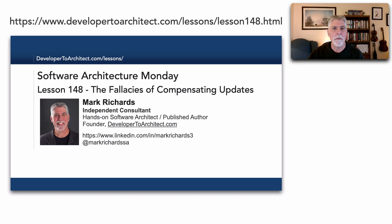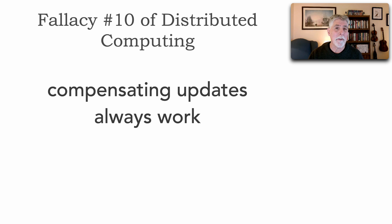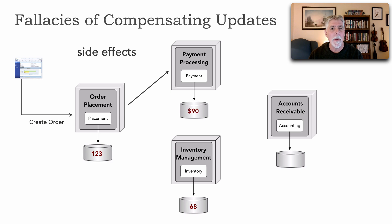Those are compensating transactions to reverse an action we do within a distributed architecture. In that lesson I talked about and coined and published fallacy number 10 of distributed computing — that compensating updates always work. What I showed in lesson 148 were two problems with compensating updates: those side effects that happen as we place an order and commit that data, and then apply a payment.